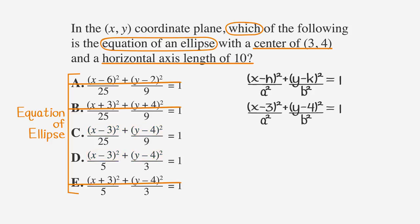Next, we need to look at our horizontal axis. In our ellipse equation, a stands for half the length of the horizontal axis. So if we have a horizontal axis length of 10, that means 2a equals 10, which means a equals 5, so a squared should be equal to 25. If we substitute 25 for a squared into our formula, we see that C is the only remaining answer choice with a squared equaling 25.